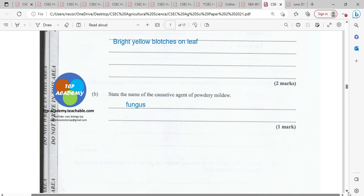State the name of the causative agent of powdery mildew. Powdery mildew is a fungus. So of course, it is treated with a fungicide. Causative agent: fungi.